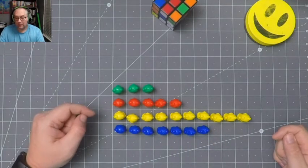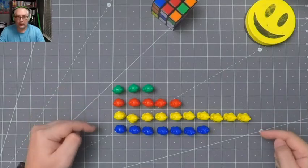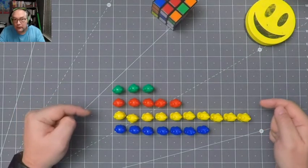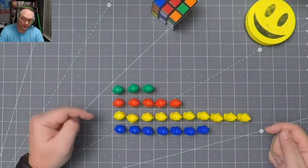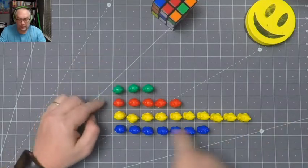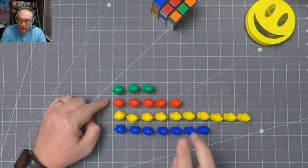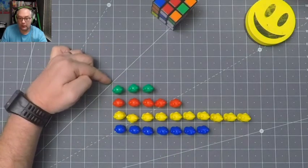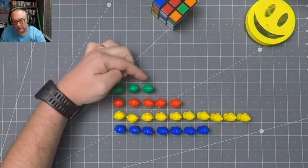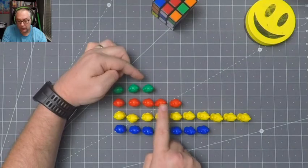But I can also find other things. I can use this to find the differences between each kind of bear. So I can say that there are one, two, two more red bears than there are green bears. Because see, the green bears go to here and the red bears start here and there's one, two more.